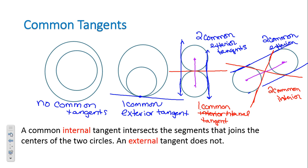To clarify terminology: I've been using 'internal' and 'exterior' — the correct terms are internal and external. An internal tangent crosses or intersects the segment that joins the centers of the circles. An external tangent does not cross that segment.